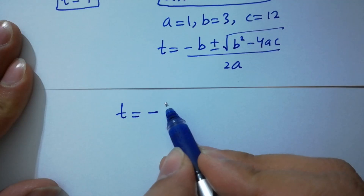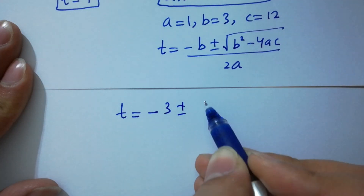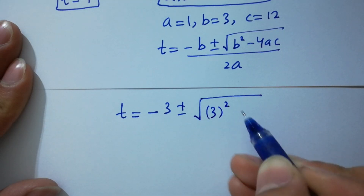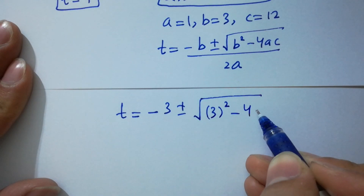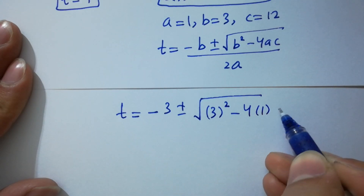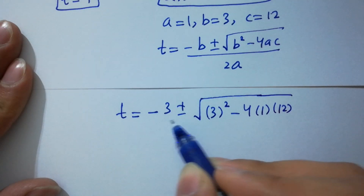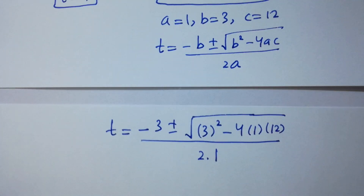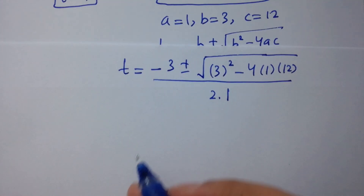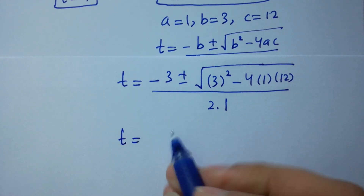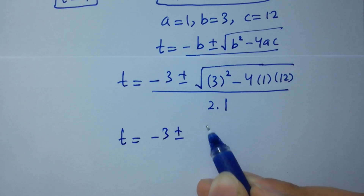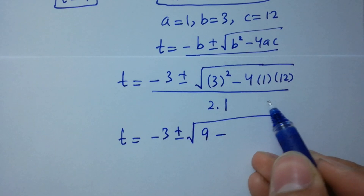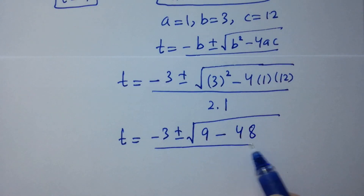t equals minus b, where b is 3, plus or minus square root of b squared minus 4ac, where b is 3, square minus 4, a is 1, and c is 12, over 2, where a is 1.